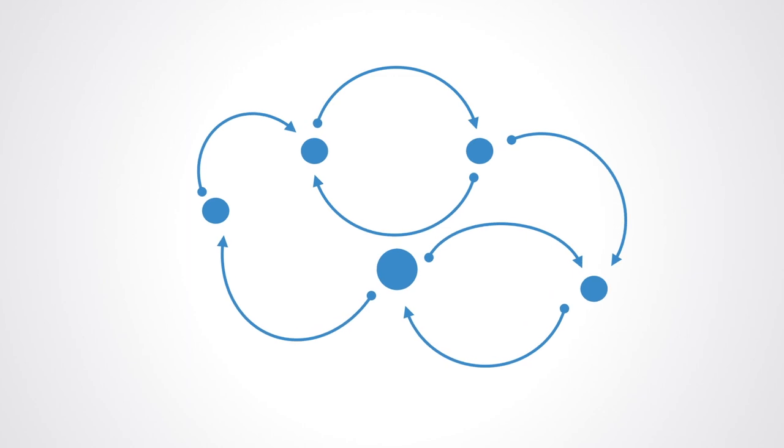Put simply, system maps are powerful visualization tools that can help change agents describe and diagnose the current state of a given system, create a shared vision of it, get consensus about the problems, and identify opportunities.